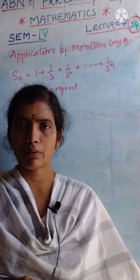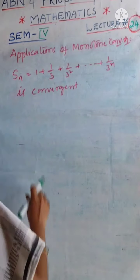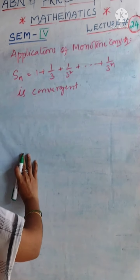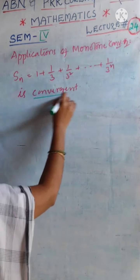Let us continue the applications of Monotone Convergent Theorem. Now we want to prove that the sequence given by 1 plus 1 by 3 plus 1 by 3 square and so on by 3 power n is convergent.